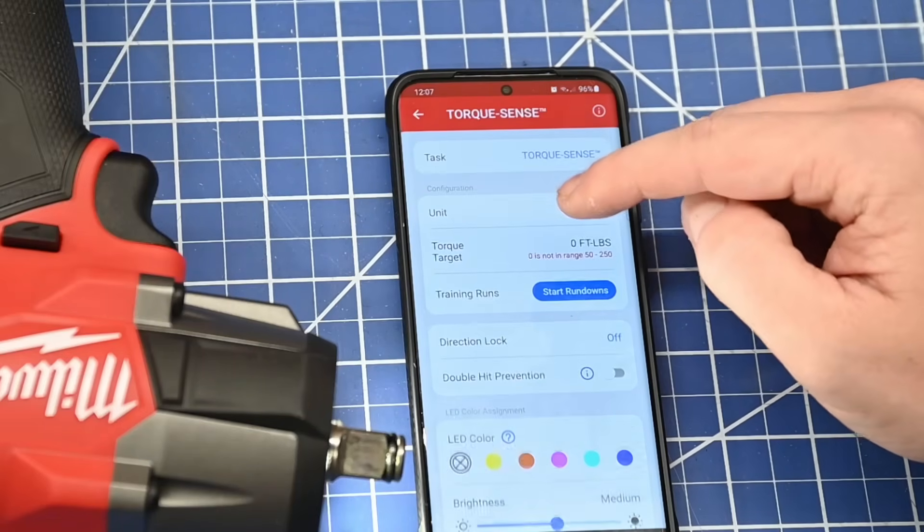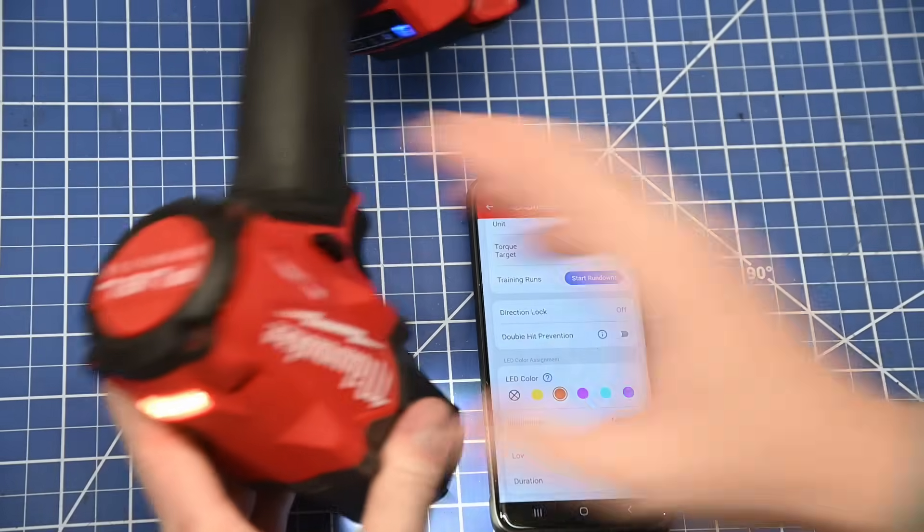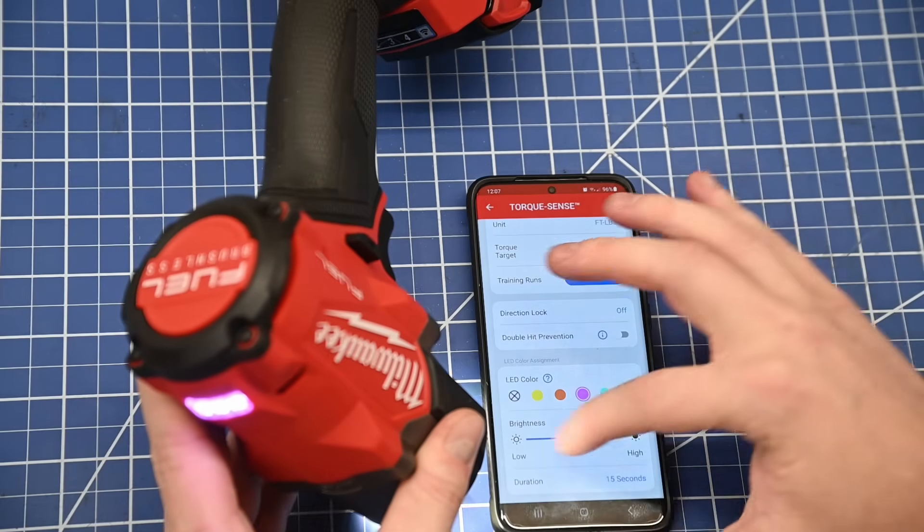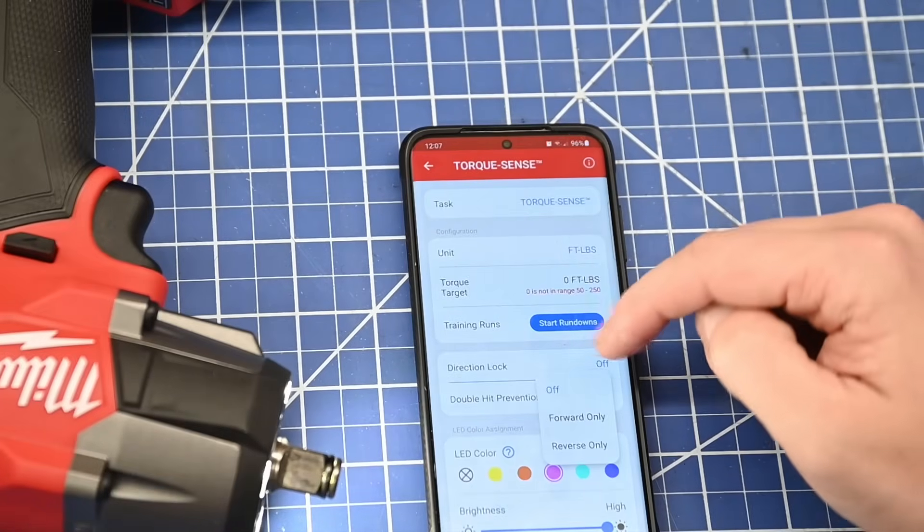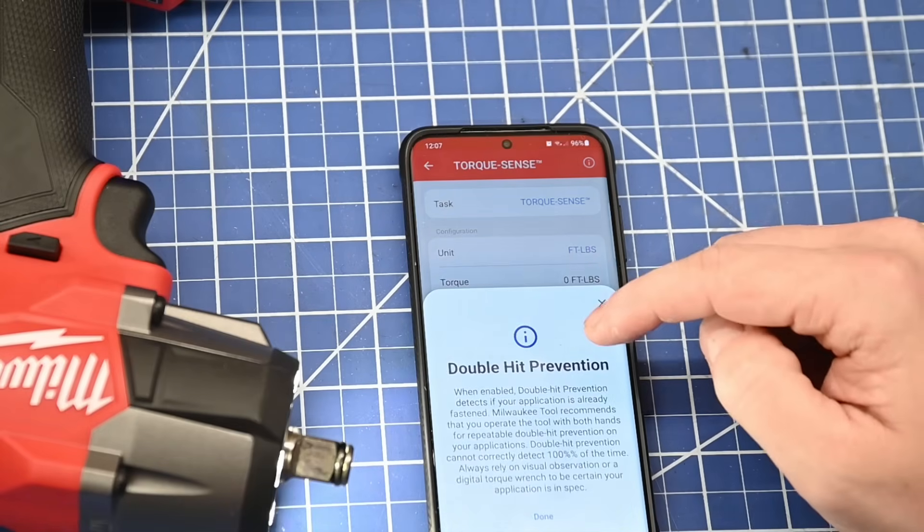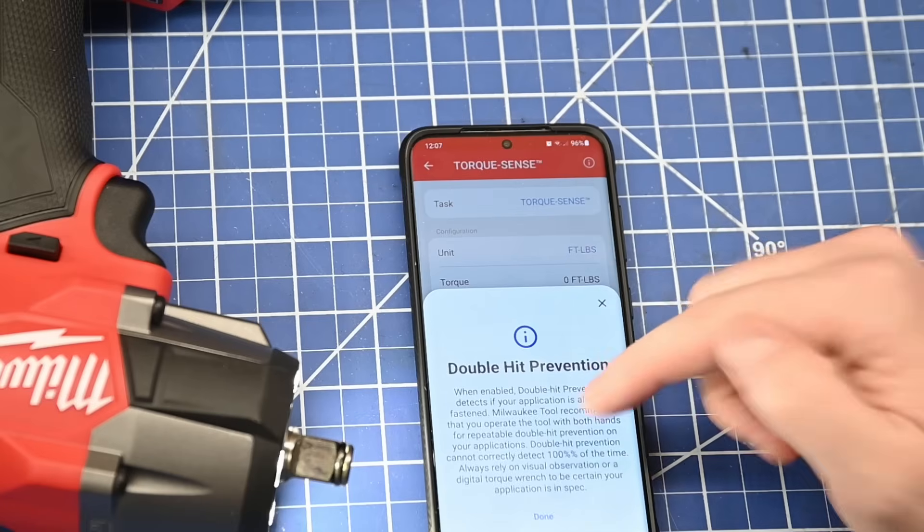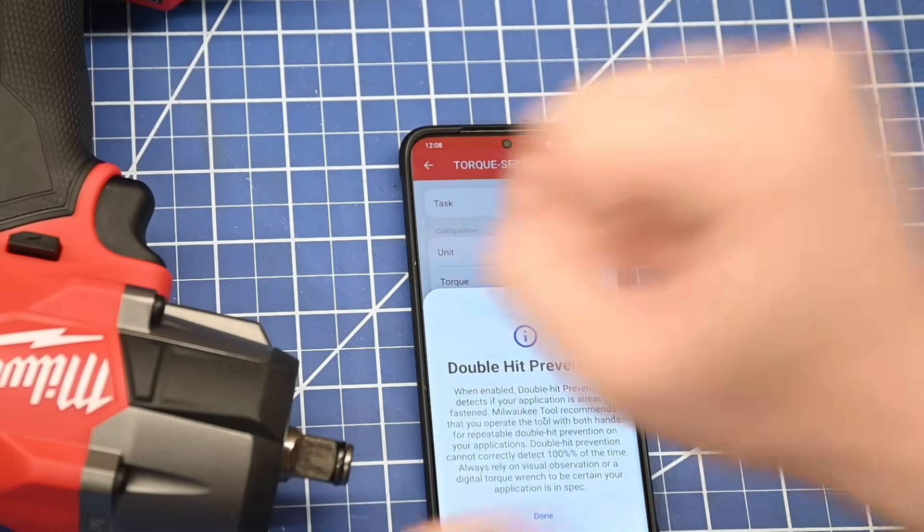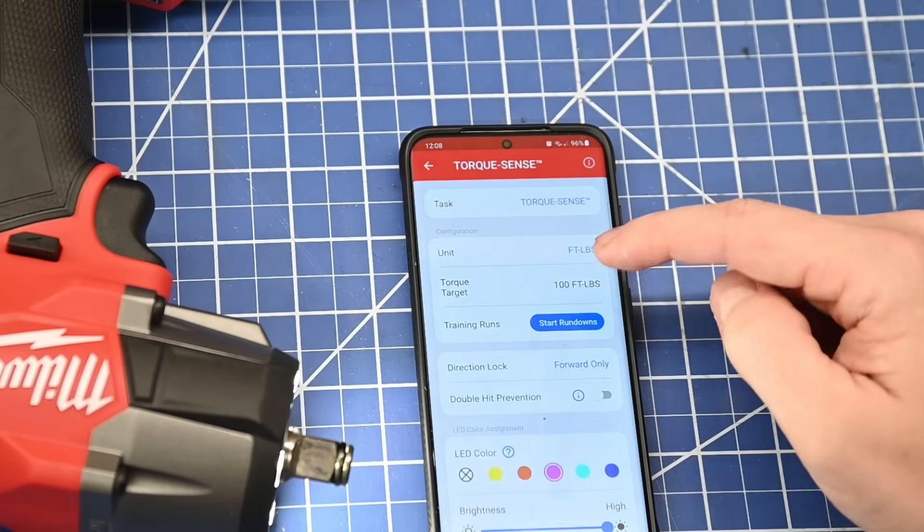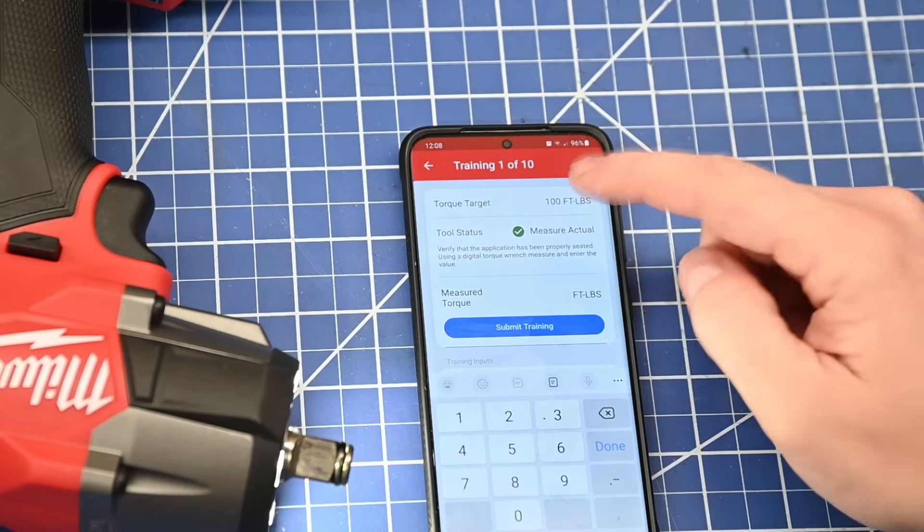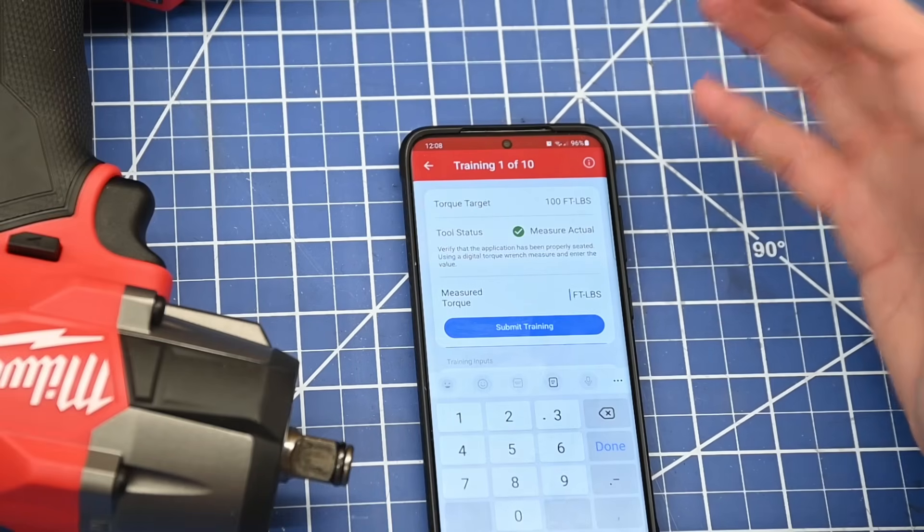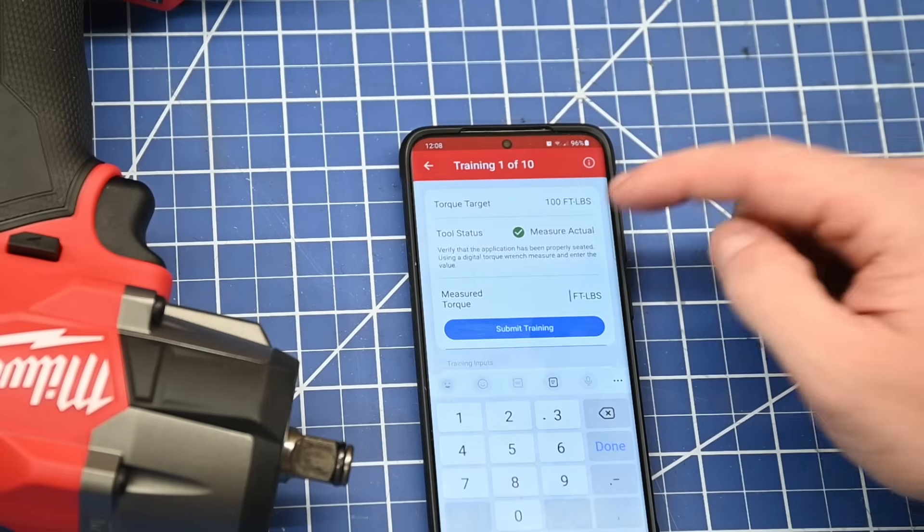Now torque sense comes with a lot of different settings and options. You can change the LED color when it's hit the torque setting you want, we'll leave that on magenta. You can change the brightness, duration. Direction lock, whether you want this torque to apply only in forward or reverse. Double hit prevention, so if the bolt's already tight, this will stop you from tightening it again. It does request that you put both hands on the tool. Then you input the amount of torque you want to set this to, and then you go through your start rundown process. This is where you pull the trigger and then use a torque wrench to remove it and input the value you get. Now we have a whole dyno setup with bolt tension, so we don't need to do that.